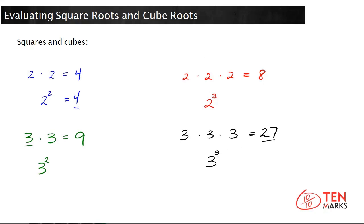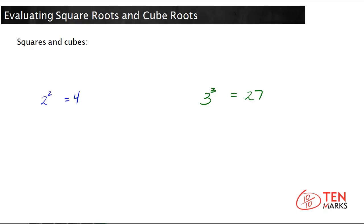Now let's talk about how we take the root of a number. The root, in either case — in the square root or the cube root — is the number that you multiplied by itself to get the square or the cube. For example, we got to 4 by multiplying 2 times 2, so 2 is the root of 4. Which means that if I ask you to take the square root of 4, you're going to give me an answer of 2.